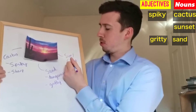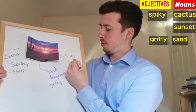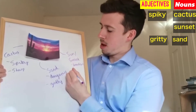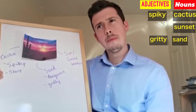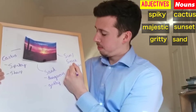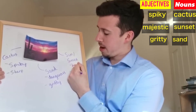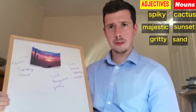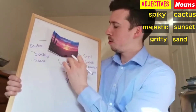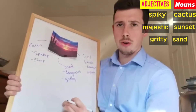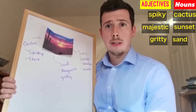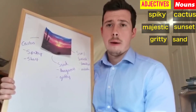Moving on to our other nouns — the sun and the sunset. It's very beautiful. I'd say quite majestic as well; that's a good year-five word. Once you've got your nouns and your adjectives, you're then going to write sentences underneath, either on paper or have your child say them verbally.